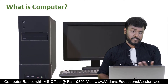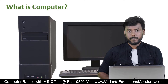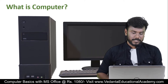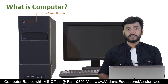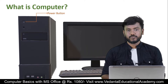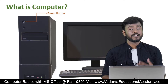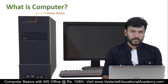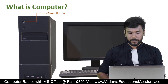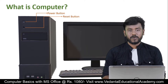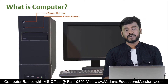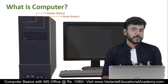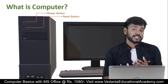Now we will understand the parts one by one, starting from the CPU. On the front of the CPU you can see the power button, which is used to turn the power on and off. There is also another button called the reset button — if the system is not working properly or is hanging, you use the reset button to restart your computer.